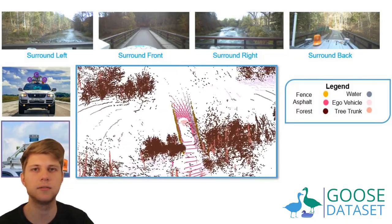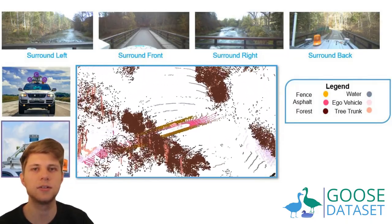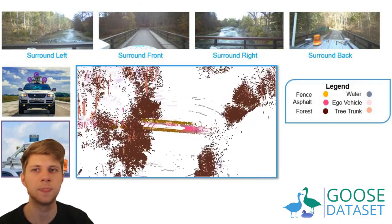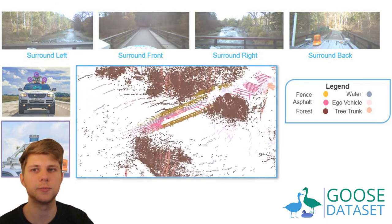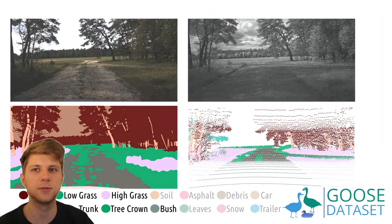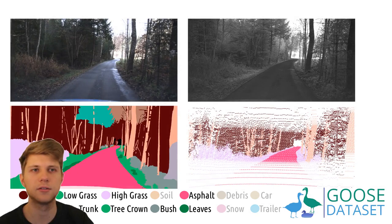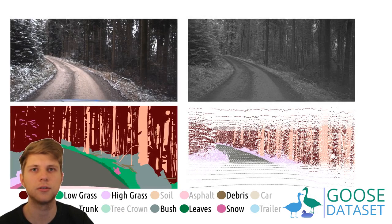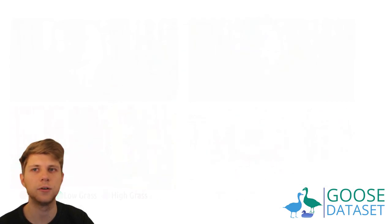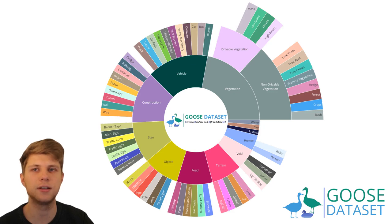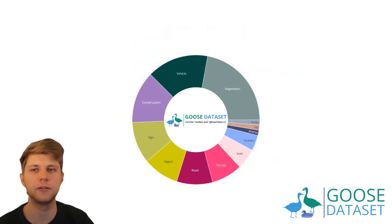This means that we have 2D and 3D semantically segmented sensor data from the same scene. We also published the other sensor data that wasn't annotated in the form of ROSBAGs. We annotated 10,000 scenes in total. The recording period lasted over a full year and includes recordings of all four seasons and a diverse set of weather conditions. A fine-grained labeling policy includes 64 semantic classes to cover both urban and off-road driving scenarios, and the semantic classes are organized in a hierarchical manner to allow coarse segmentation of the scene as well.